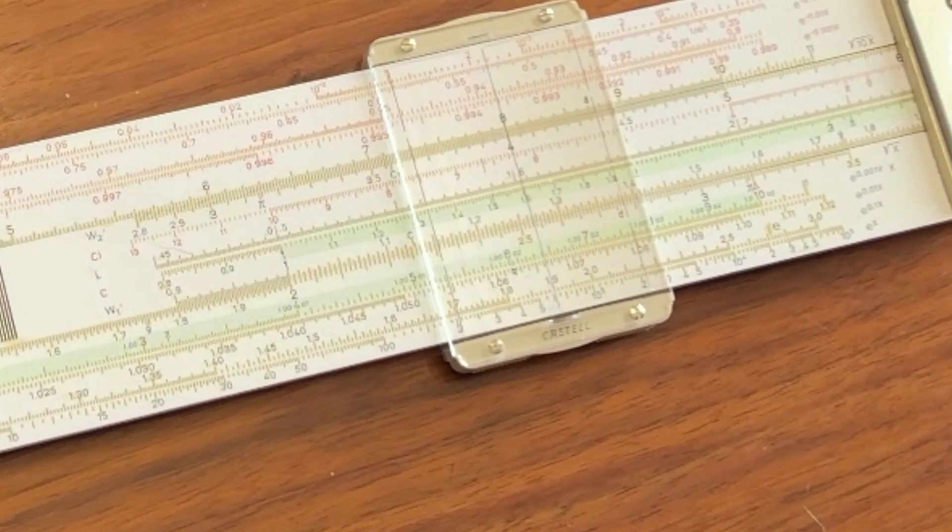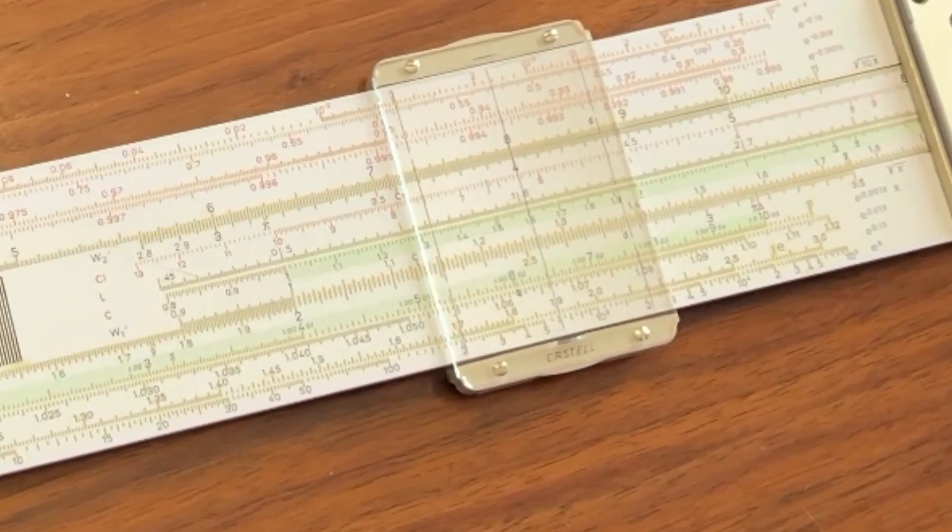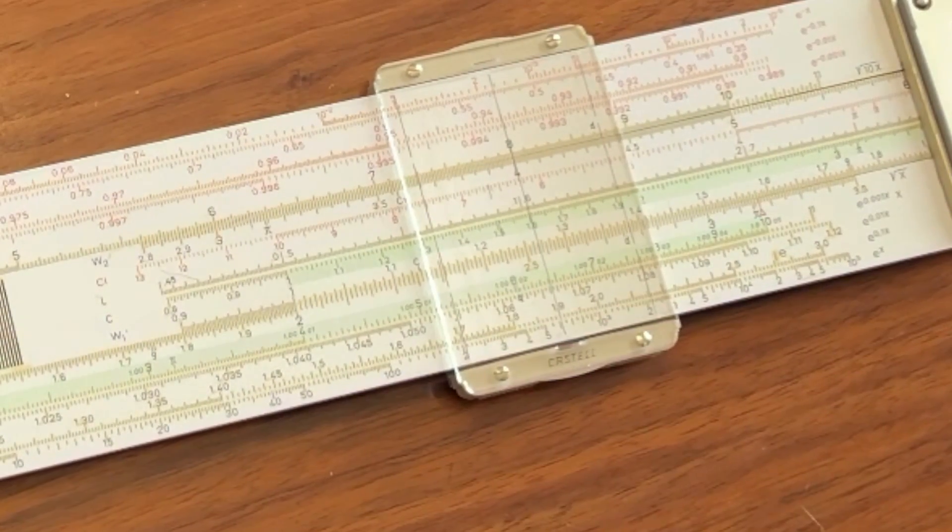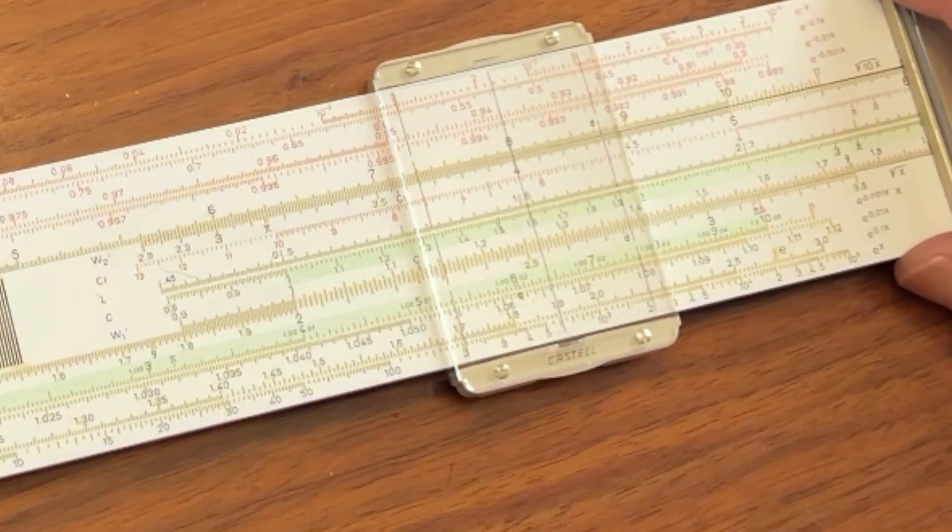Now this will give you 3, if not 4, significant digit precision because this is doing it to the accuracy of a 20-inch slide rule on a 10-inch slide rule. Now there is a cool little trick that you have to do with this, though.